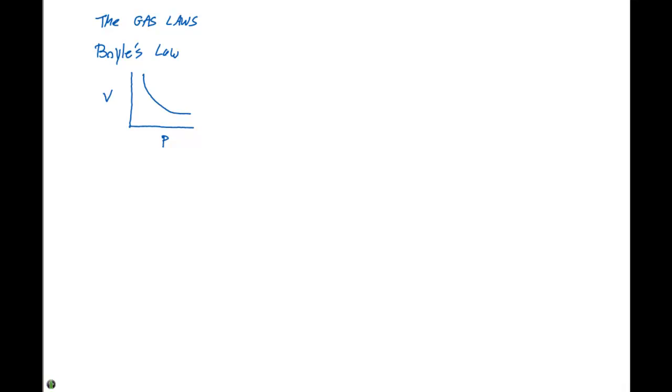We like to see linear graphs, and he investigated how he could make this particular graph linear. So what Boyle did was he looked at the volume of a gas and plotted it versus one over the pressure, and he saw that this became a linear relationship.